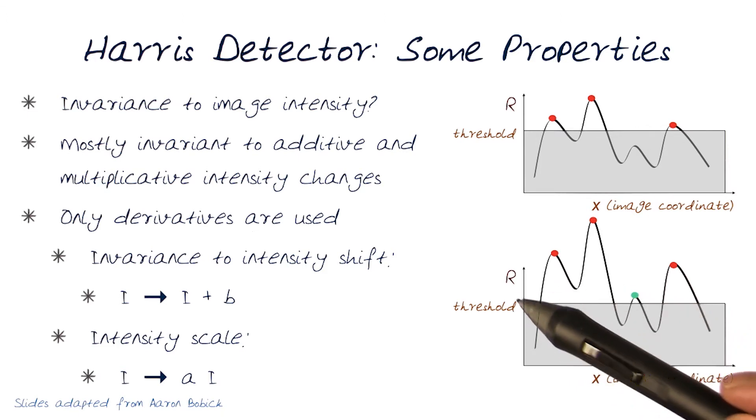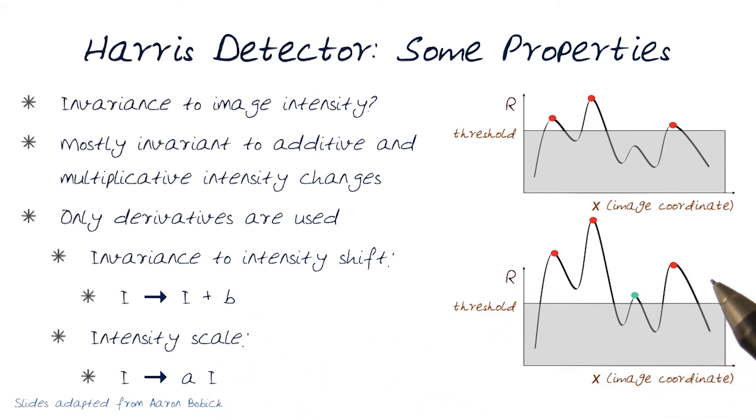So then we would have to have an adaptive threshold that knows more about the scaling impact of the intensities in an image. But otherwise, we still should be able to find them, because the shape of the response over the whole sequence should still be the same.